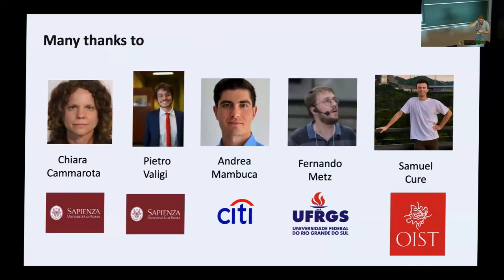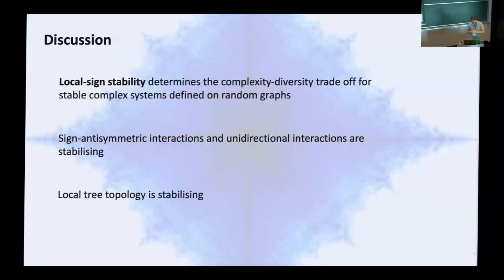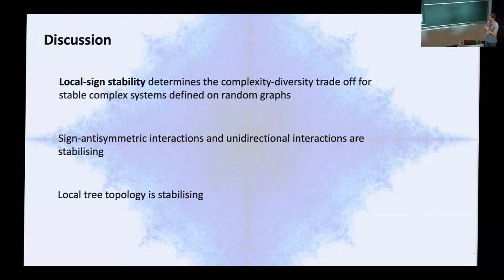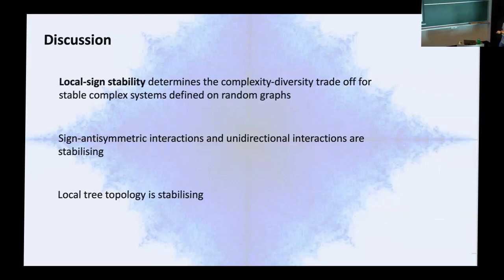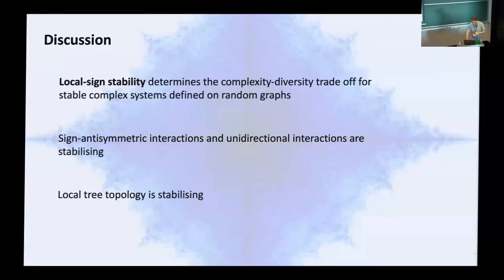Let me thank all the collaborators who worked on this research. To summarize: local sign stability determines the stability of complex systems on random graphs. For random graphs — different from fully connected systems — the sign pattern really matters for stability. Two sign patterns stand out as stabilizing: sign-antisymmetric interactions and unidirectional interactions. A third stabilizing property is a locally tree-like topology, meaning a small number of short cycles. Thank you very much for your attention.